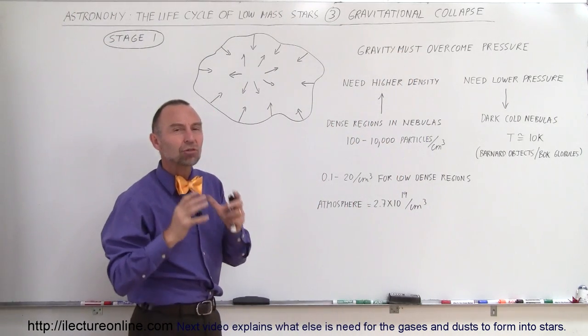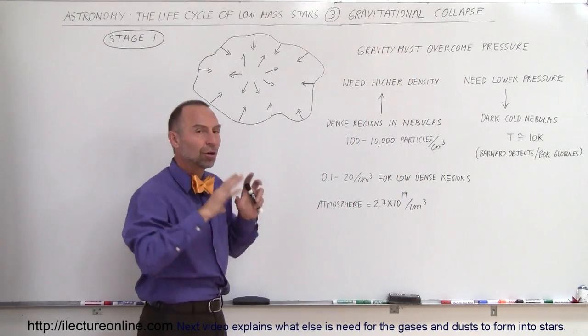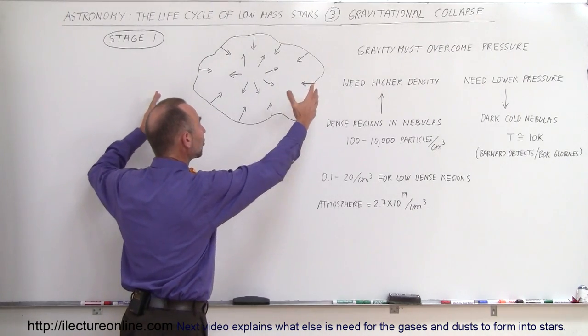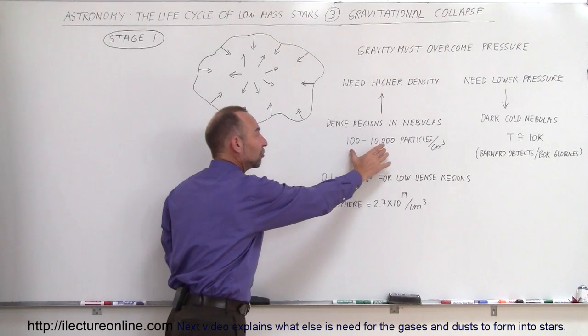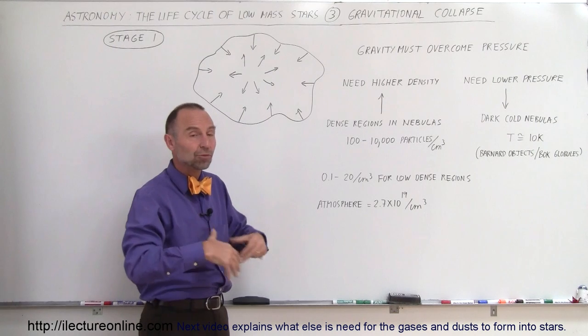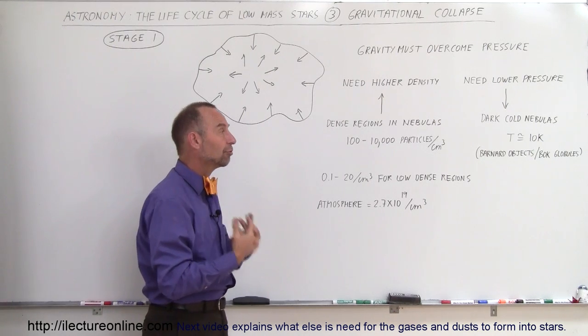For a star to form, gravity must somehow overcome the pressure pushing back against gravity. And as long as these clouds are huge in size and the density is very small like this, there's not a lot of chance that gravity can overcome pressure. Pressure will push back and stars will just not form.